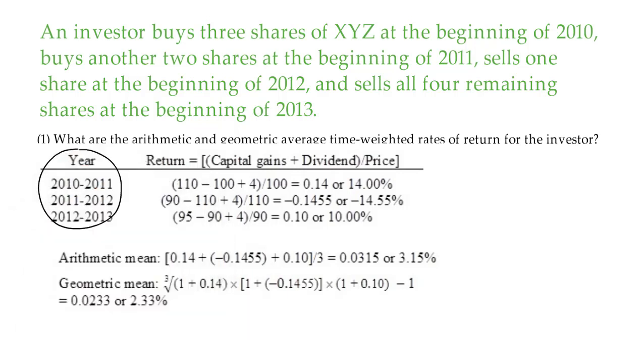As you can see in the table, the first column shows you year 2010 to 2011 and 2011 to 2012. The second column, which is return, equals capital gain plus dividend divided by price. The capital gain is the purchase price subtracted from the sales price.